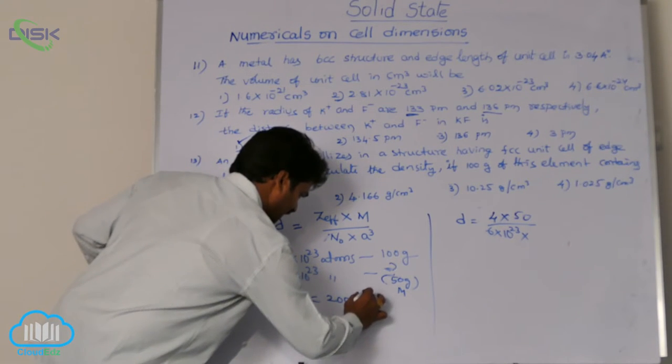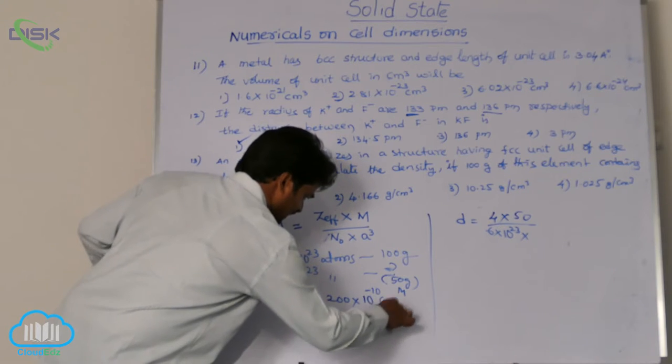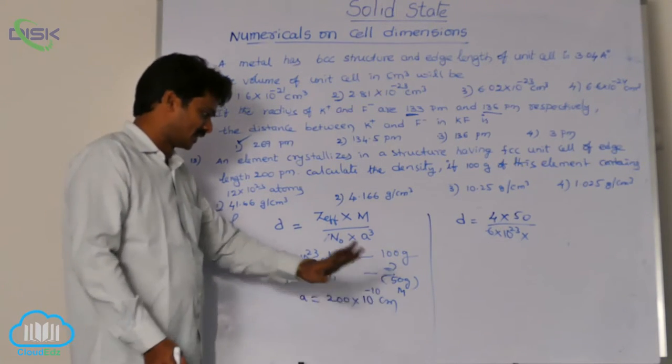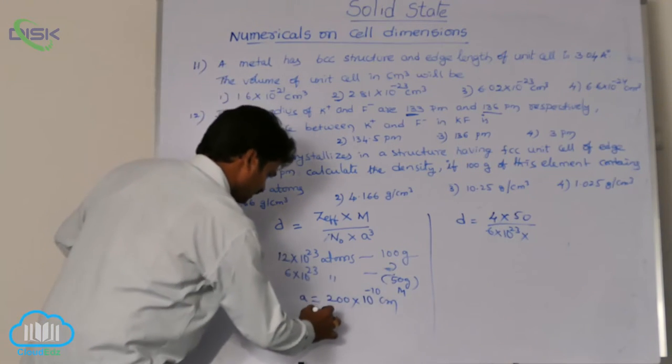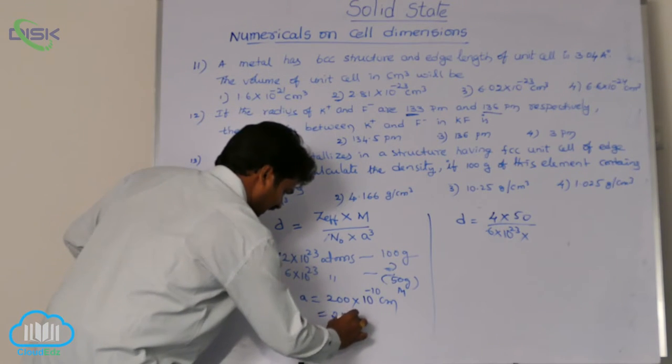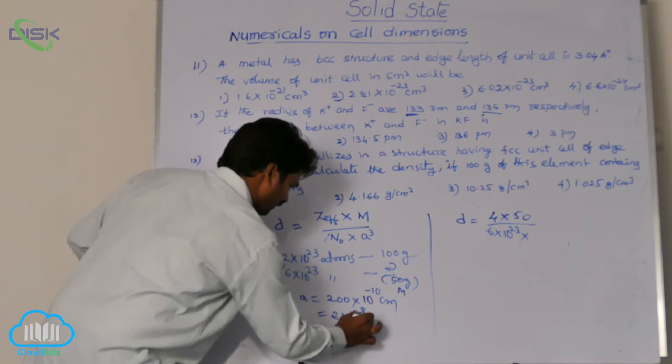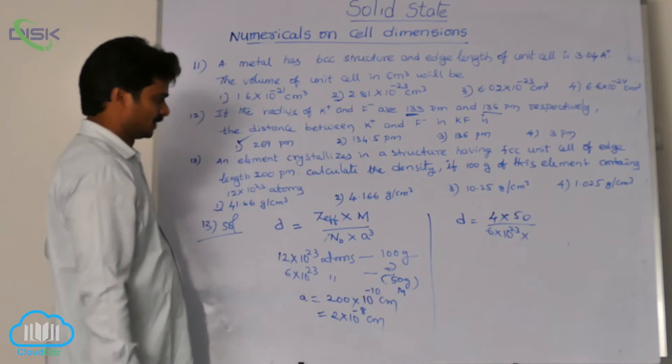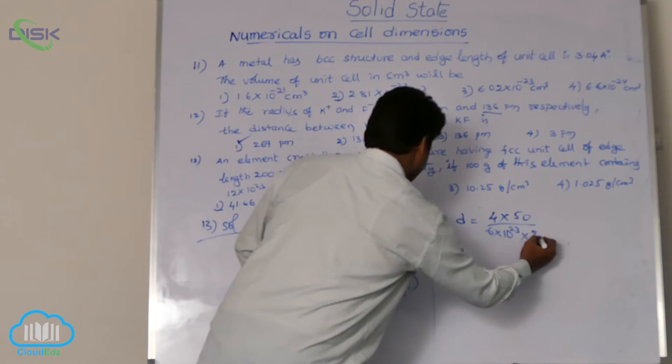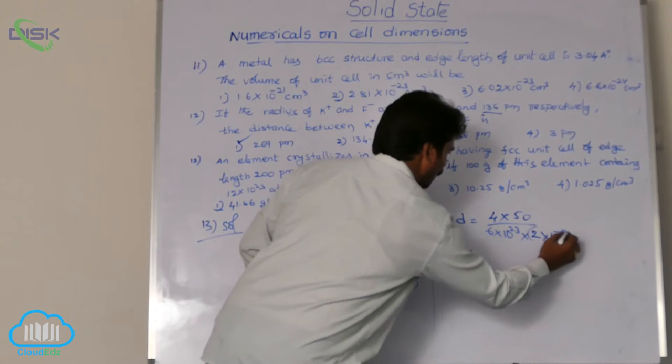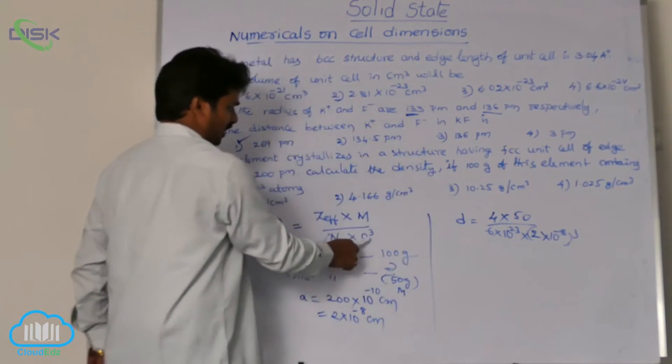You know 1 picometer equal to 10 power minus 12 meters or 10 power minus 10 centimeters. So 200 into 10 power minus 10 centimeters. This is edge length. Here I have converted the given picometers into centimeters. Now its value is 2 into 10 power minus 8 centimeters. So now substitute in this. It is edge length 2 into 10 power minus 8 whole cube because this is A cube in the formula.